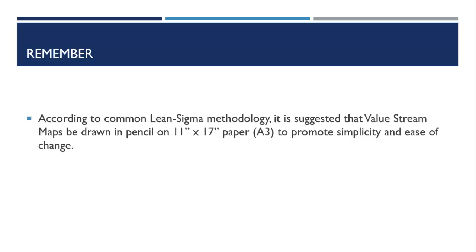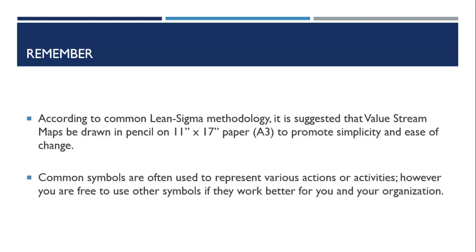Let's review. According to common Lean Sigma methodology, it is suggested that value stream maps be drawn in pencil on 11 by 17 inch paper to promote simplicity and ease of change. Common symbols are often used to represent various actions or activities; however, you are free to use other symbols if they work better for you and your organization. Now that you have been introduced to the concept of flow charting and mapping processes, let's look at the next steps you should take to master this key concept.